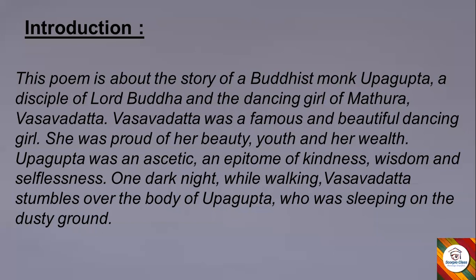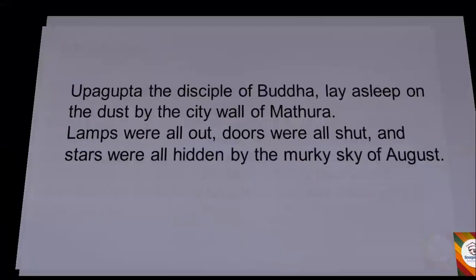One dark night, while walking, Vasavadatta stumbles over the body of Upagupta, who was sleeping on the dusty ground. She dashes into him because he was sleeping on the dusty ground, which she did not notice. Vasavadatta was a very famous and beautiful dancing girl, very proud of her beauty, youth, and wealth.